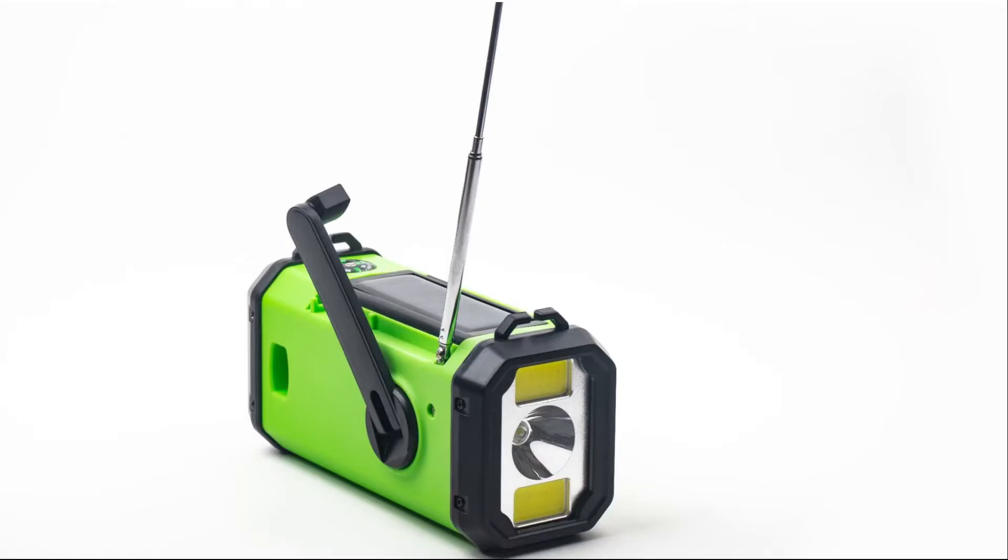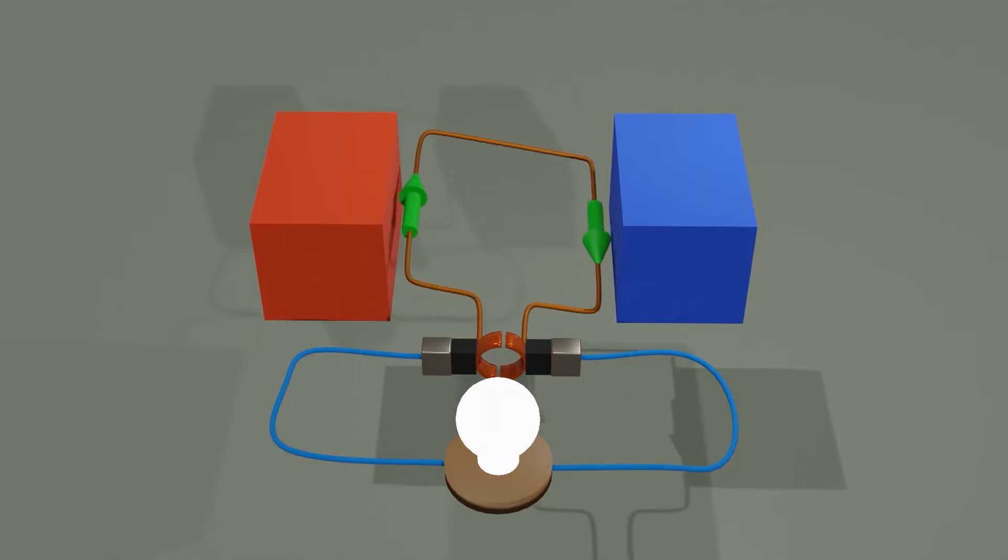The same principle is at play with this crank flashlight. If we spin that crank, it will actually spin a wire between magnets, which turns out to generate an electric current and light the light bulb. Here's how it works.